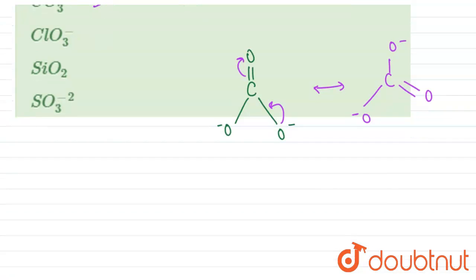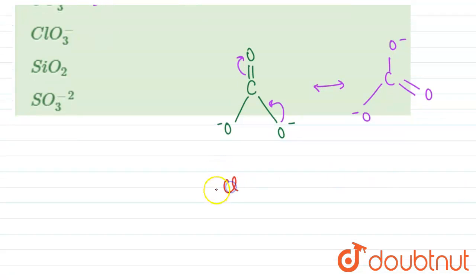Checking for chlorate now, chlorate has the following structure: Cl double bond O, double bond O, and a single bond O which has a minus charge, and also this chlorine has one lone pair.